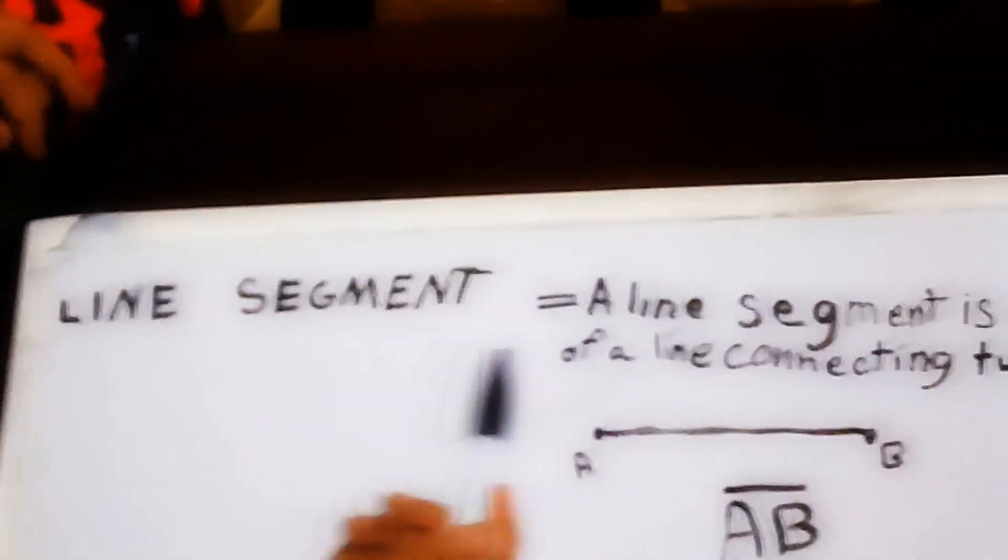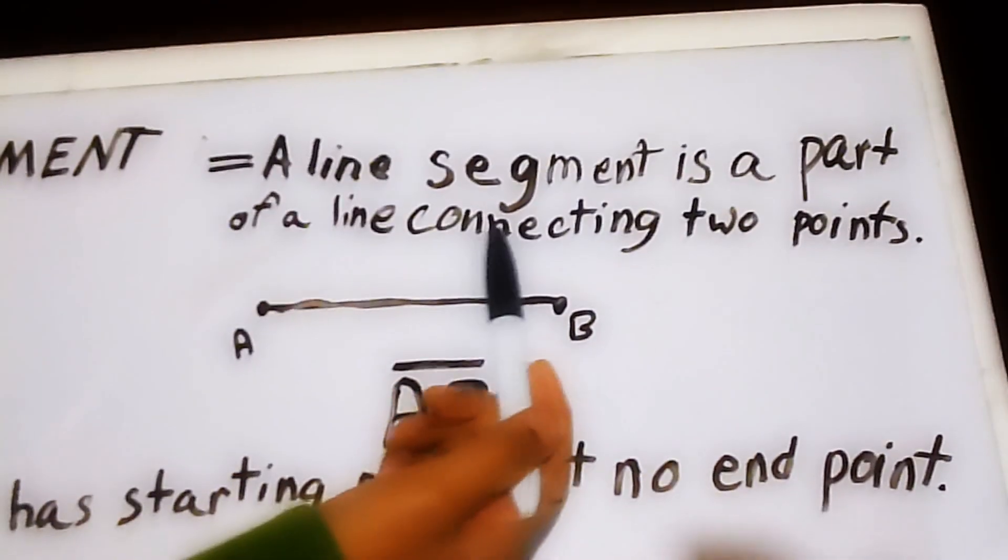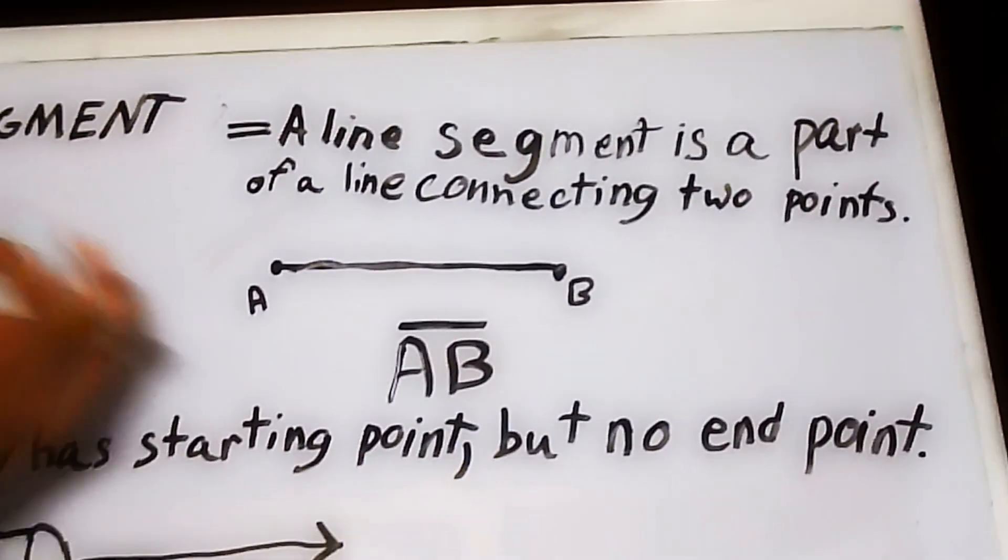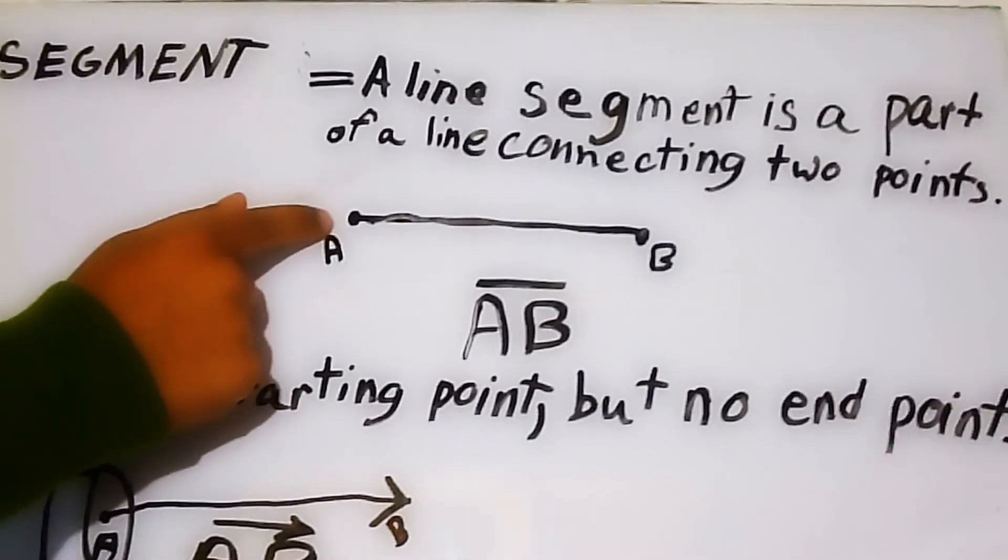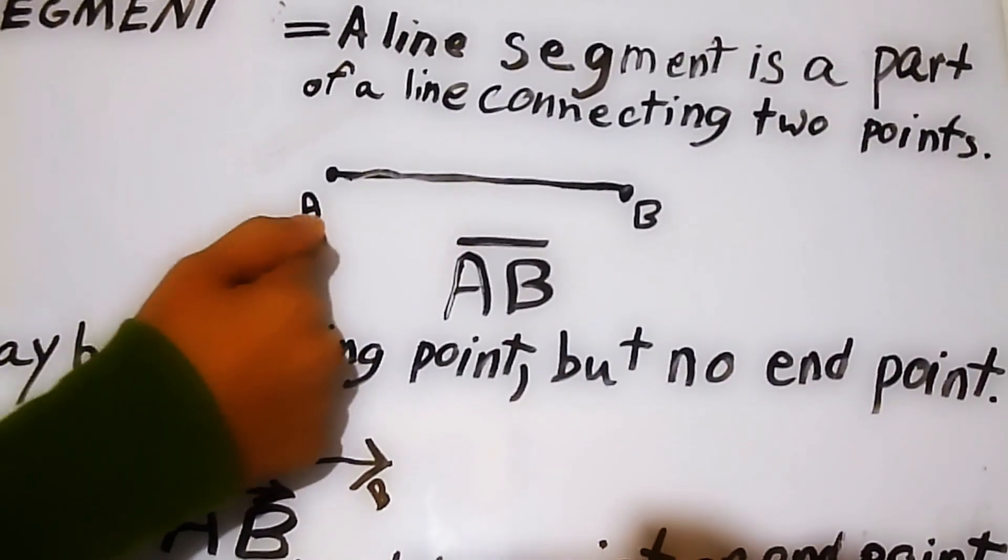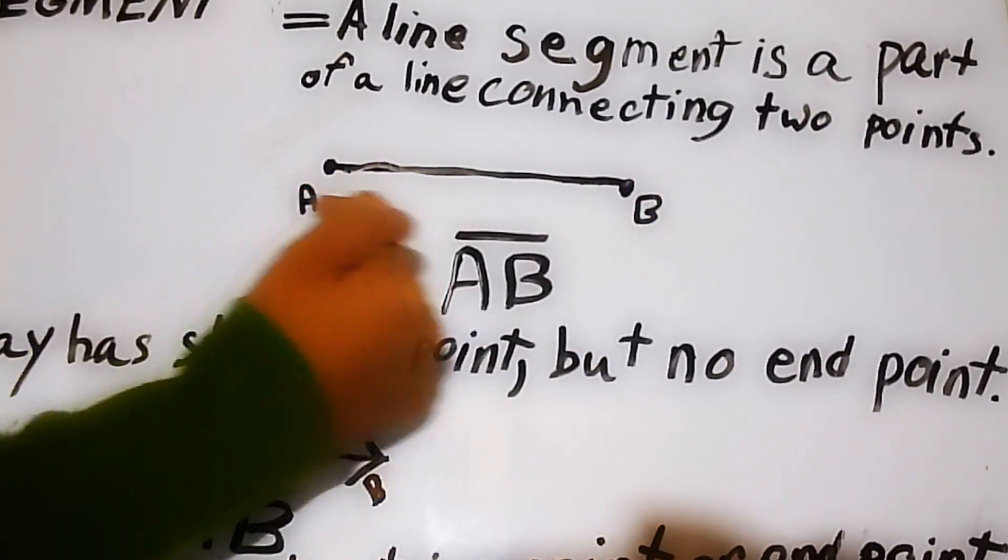For example, a line segment. A line segment is a part of a line connecting two points, just like these two. That's what a point is called. And you can see, these are the letters I've named them, A and B.